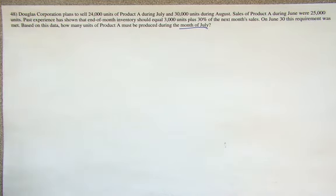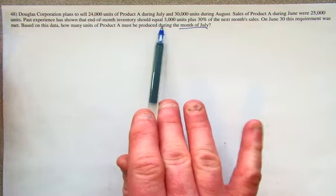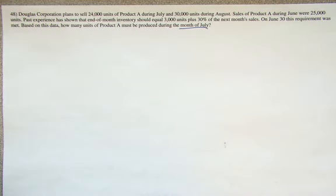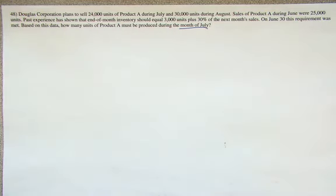That's the goal of the production budget. What we're seeing here is that this company is selling one product. During July, they plan to sell 24,000 things and 30,000 things during August. It looks like during the month of June, they actually did sell 25,000 items. Here's where some of the tricks come into play - the ending inventory. There are going to be certain assumptions or parameters that the company will establish. What they want to do is they want to keep 3,000 items on hand plus 30% of the following month's sales. That's going to be our predicted ending inventory. On June 30, this requirement was met.